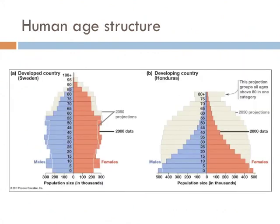Here is a comparison of age structures of two human populations. On the left is a typical age structure of a developed country, with a fairly even distribution of age groups until later in life. In comparison, the graph on the right is of a developing country, which has a very unequal distribution of age groups, showing that the likelihood of surviving childhood is far lower than in a developed country.